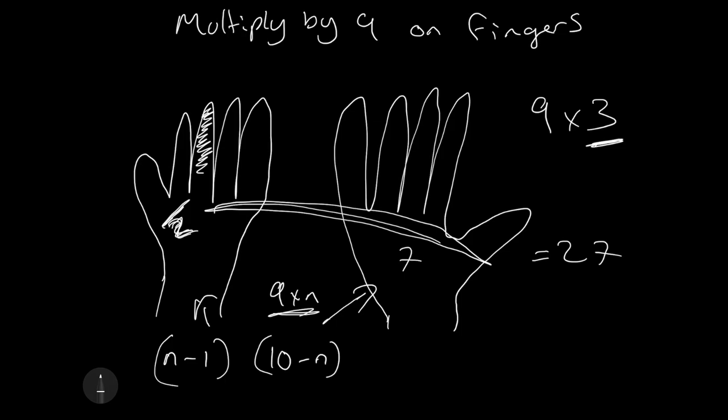When you put this back together as a two-digit number, your n minus 1 is your first digit, but of course that is in the 10 space, so we'll put 10 in front of that. Then you add on your units, which is 10 minus n.